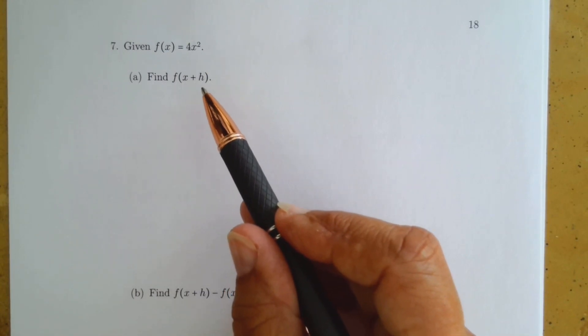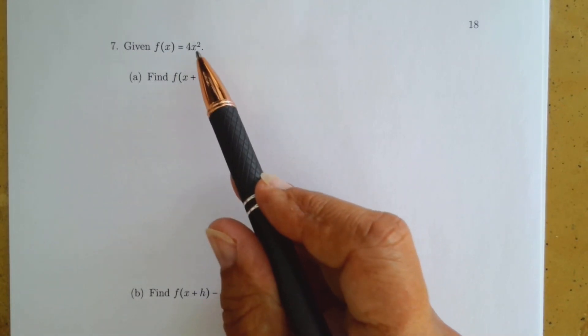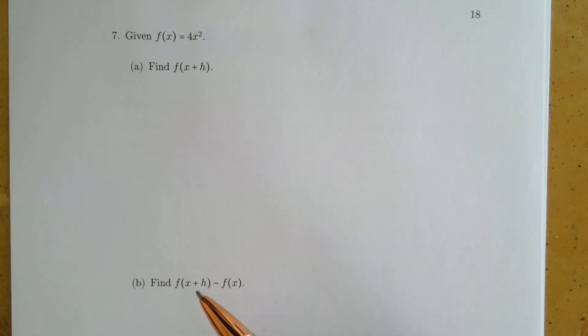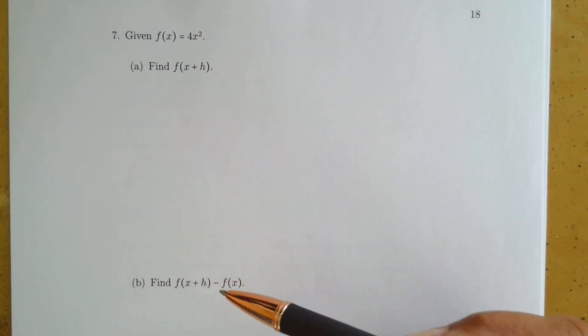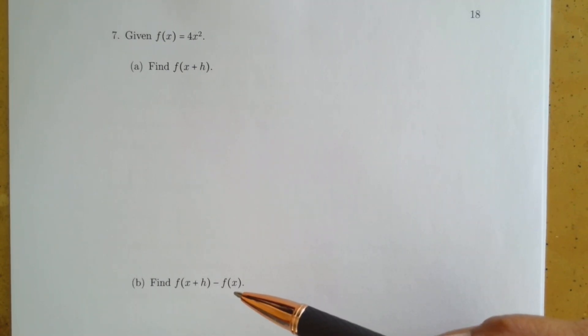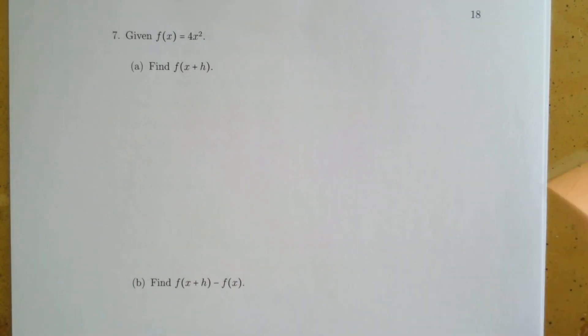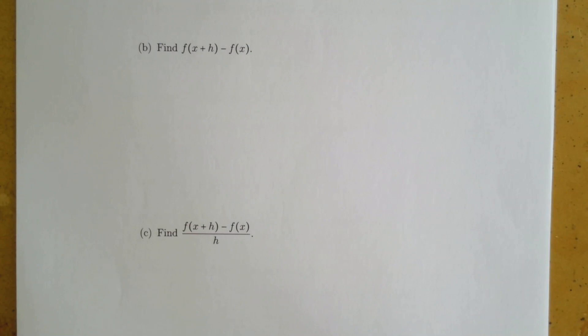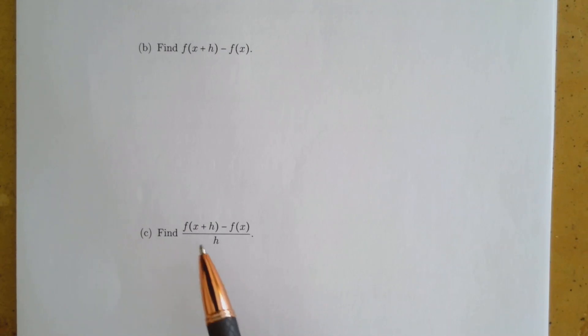In part a we're going to find f of x plus h — we replace all the x's in the function with x plus h and simplify. In part b we take f of x plus h and subtract f of x from it. Part c is the difference quotient: f of x plus h minus f of x, all over h. That's what we're trying to understand.